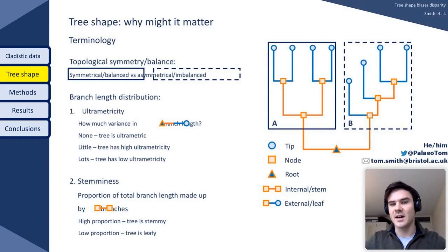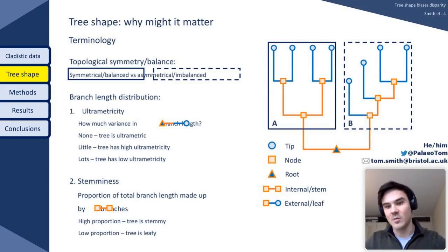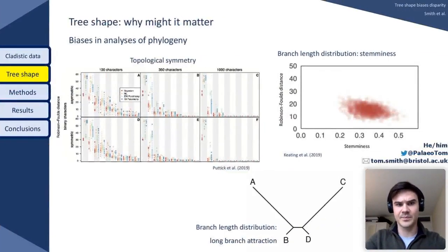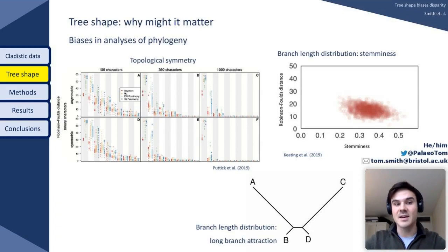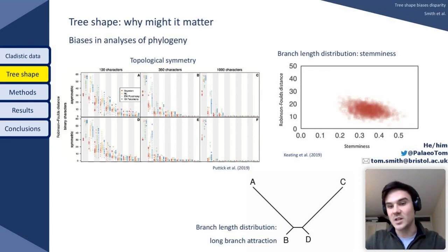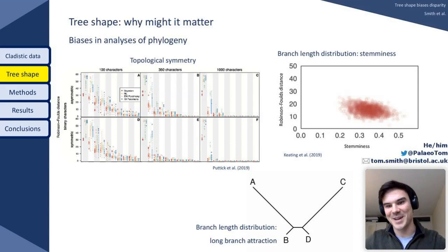Why am I discussing tree shape? There seems to be evidence that tree shape compromises the performance of phylogenetic reconstruction methods. The study of Puttick and colleagues suggested that asymmetric trees are more difficult to resolve accurately than symmetrical ones. The work of Joe Keating and colleagues suggests that leafier trees — those with lower stemminess — are likewise more difficult to resolve with phylogenetic methods. And of course there's a long history of the problem of long branch attraction and how it impacts upon the efficacy of phylogenetic methods.